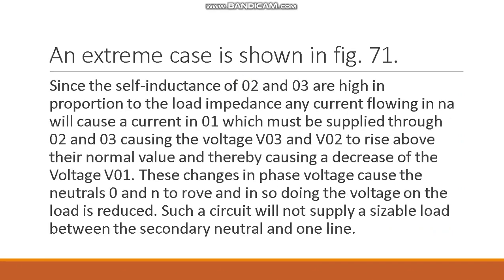Any currents in transformers 2 and 3 must therefore be exciting currents only. Since the self-inductance of 2 and 3 are high in proportion to the load impedance, any current flowing in NA will cause a current IN1 which must be supplied through 2 and 3, causing the voltages V3 and V2 to rise above their normal value, and thereby causing the decrease in voltage V1.